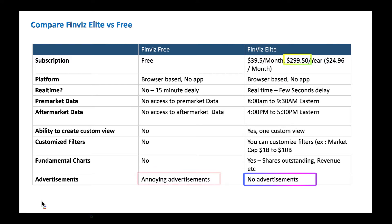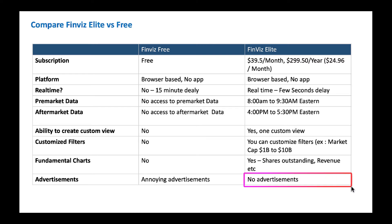Last but not least, if you're an Elite member, you can download the data easily. If you're a free member, you can only download the standard view that FinWiz provides — you can only download maybe 20 or 30 rows at a time, which is really annoying. But in the FinWiz Elite version, you can download the entire dataset of around 4,000–5,000 stocks at one shot. If you're a data junkie like myself, you would love FinWiz Elite because you can download all the data, do analysis in your own Excel spreadsheet, and combine it with other data sources to come up with great insights.